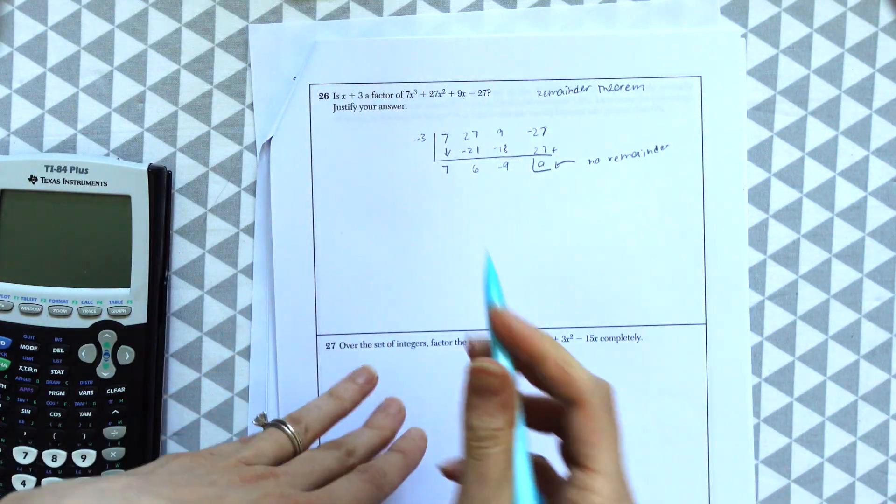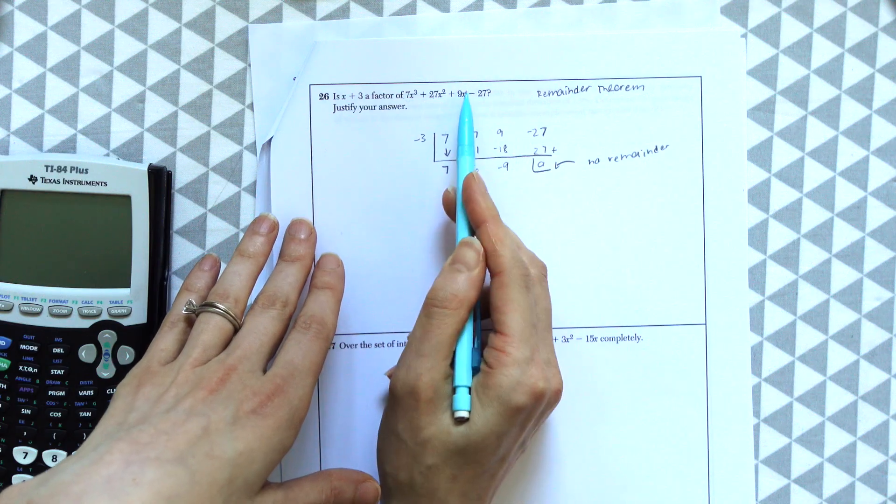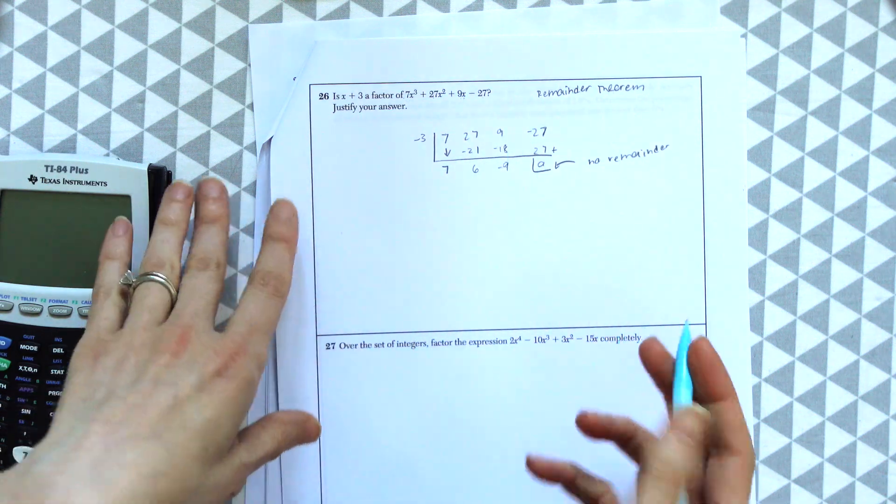So notice we have a 0, which means there's no remainder. And therefore, we could say yes, x plus 3 is a factor of this expression because the remainder is 0. And we did synthetic division.